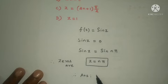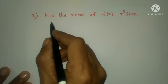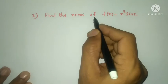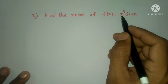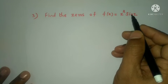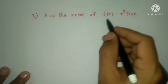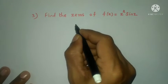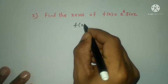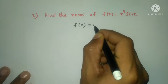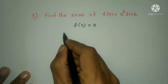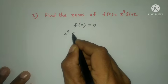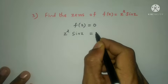The answer is option B. Next question: find the zeros of f(z) = z² · sin z. Setting z² · sin z = 0.